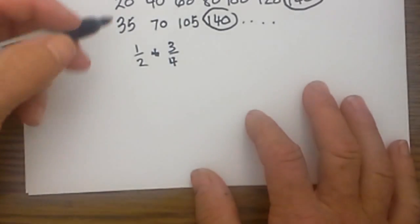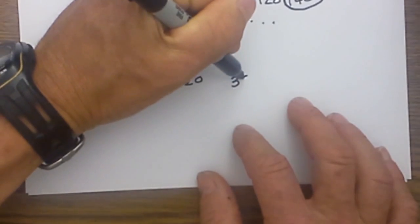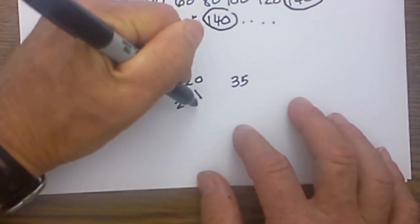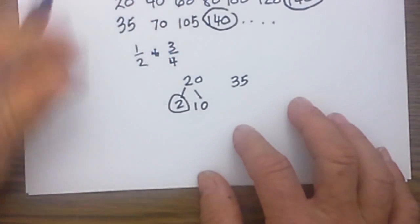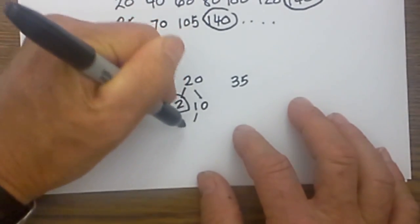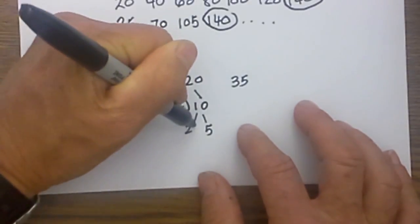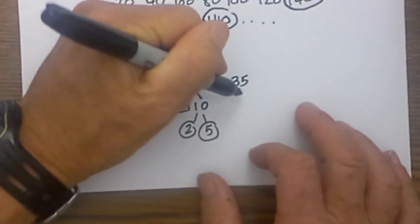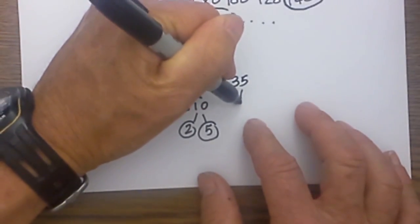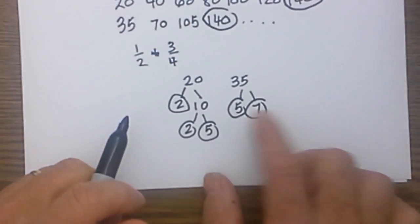So I again will write the numbers 20 and 35. I then just create a factor tree: 2 times 10 and I circle the 2, and then that is not a prime number so I then go 2 times 5 and they are both prime so I circle them. And then 5 goes into 35 times 7 and it is factored because they are both prime.